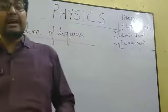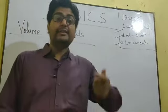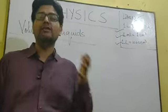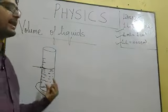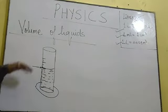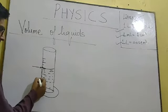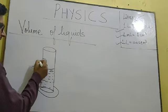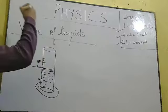Now we will learn how to measure the volume of liquid very accurately. For accurate measurement of liquid we require a measuring cylinder in which markings are given: 0 ml, 10 ml, 20 ml, 30 ml, and so on. You may use a bigger one or a smaller one depending on what you are measuring.